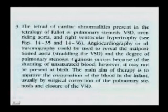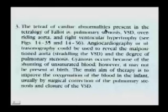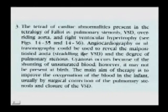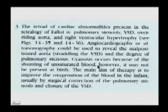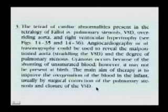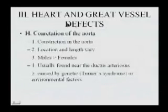The tetrad of cardiac abnormalities in the tetralogy of Fallot is pulmonary stenosis, ventricular septal defect, overriding aorta, and right ventricular hypertrophy. Angiocardiography or ultrasonography could be used to reveal the malpositioned aorta straddling the ventricular septal defect and the degree of pulmonary stenosis. Cyanosis occurs because of the shunting of unsaturated blood, though it may not be present at birth. The main aim of therapy is to improve oxygenation by surgical correction of the pulmonary stenosis and closure of the ventricular septal defect, thereby establishing single arterial output from each ventricle.